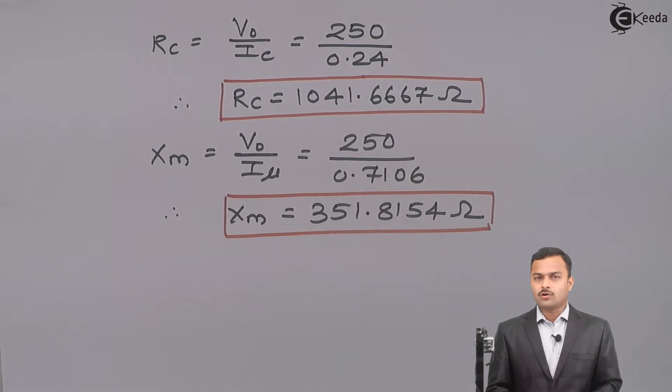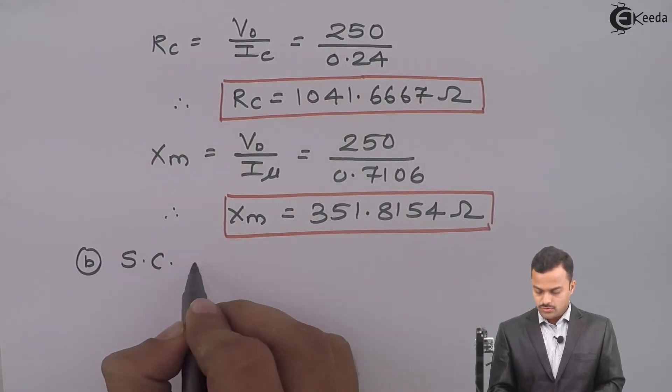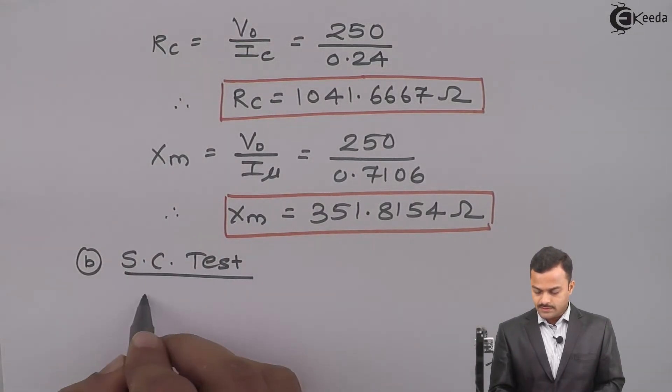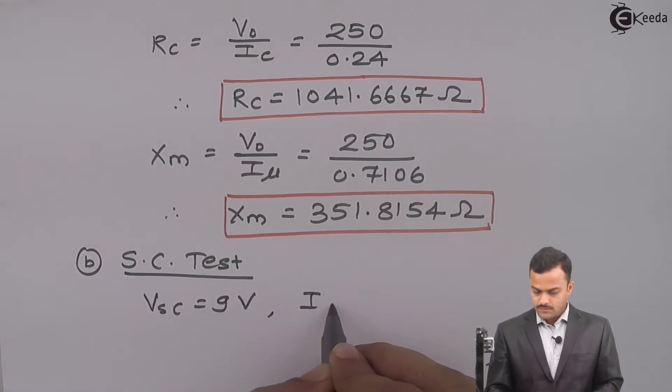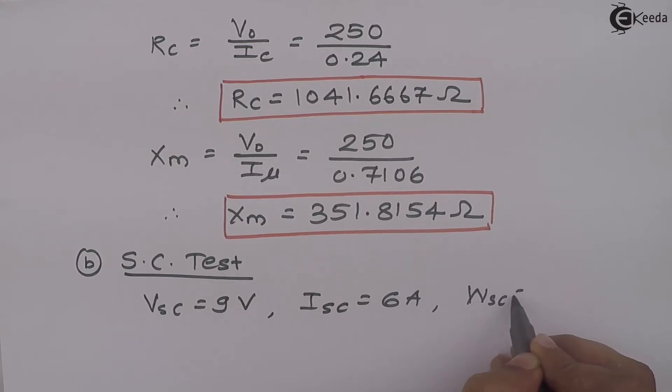This is the circuit constant from OC test. Now there is a turn of short circuit test. Results are VSC 9V, ISC 6A and WSC 21.6W.